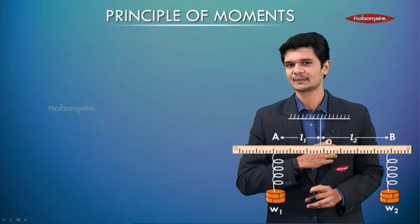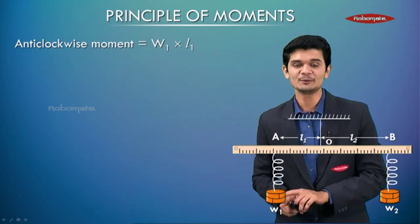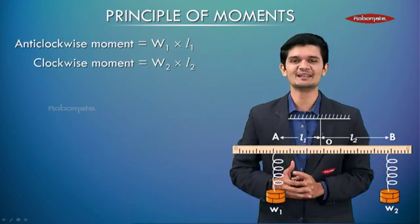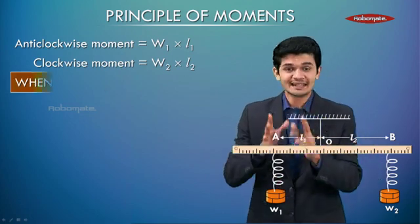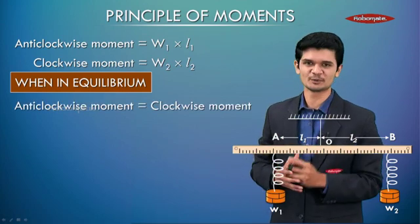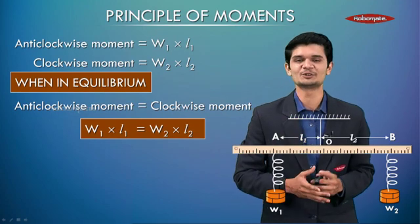So with this simple understanding, let's first calculate the anti-clockwise moment which is going to be W1 into its perpendicular distance L1 and the clockwise moment as W2 into its perpendicular distance L2. Now you should know that in this equilibrium position, the anti-clockwise moment equals clockwise moment. So from here we can see W1 L1 is always equal to W2 L2.